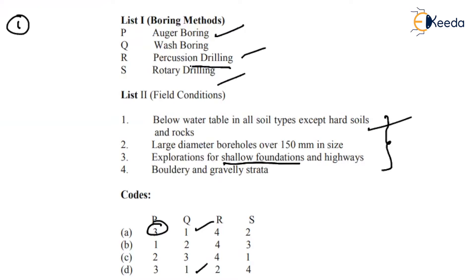Rotary drilling, already we have seen, it is used for as the name applies, it is used for the rocky soils, hard rock soils. If you see boulder and gravelly strata, these are also it comes under the category. So I can tell you S comes under four. So what is the correct option?